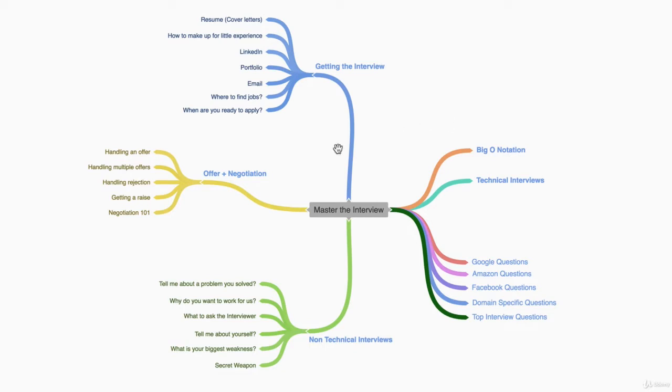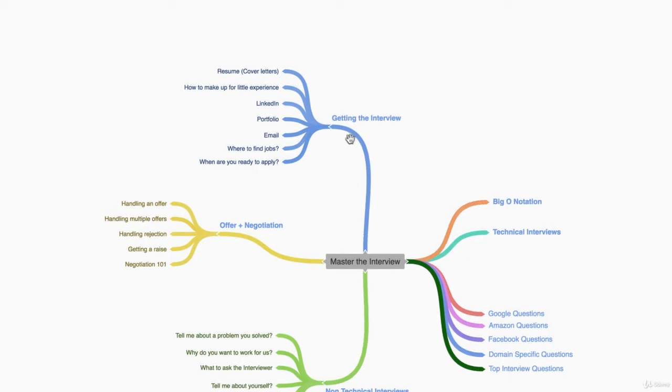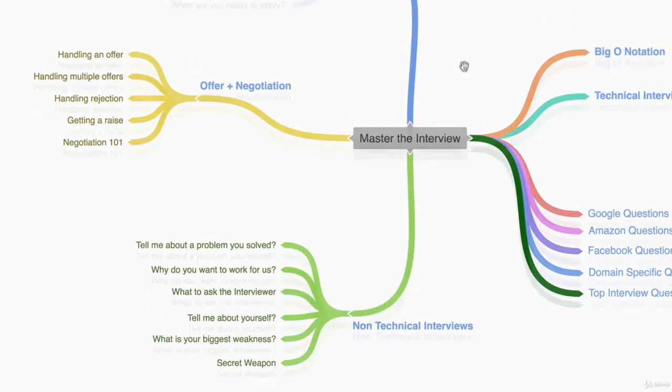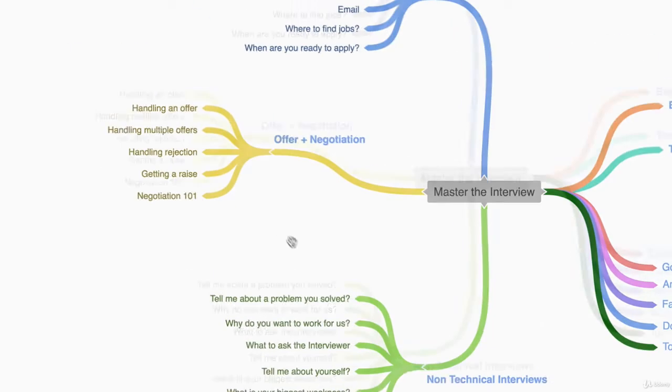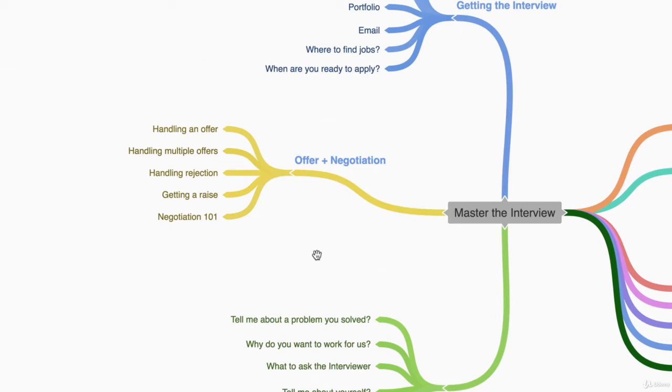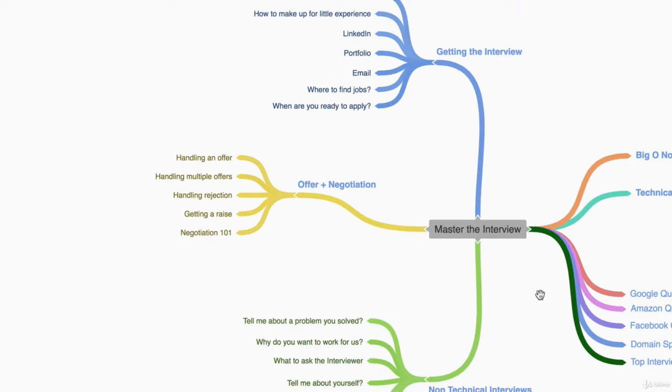The first part is the non-technical aspects of the interview. These are skills you'll use throughout your career to get a leg up from the competition and optimize your chances of getting a well-paid job that you love. We'll be talking about how to get more interviews, how to answer non-technical interview questions—the most common questions asked in interviews—and finally, offer and negotiation, an often overlooked skill where we talk about how to handle offers and even negotiate a raise.